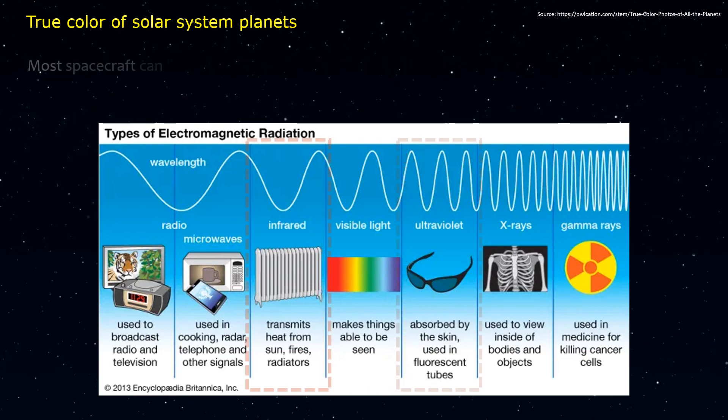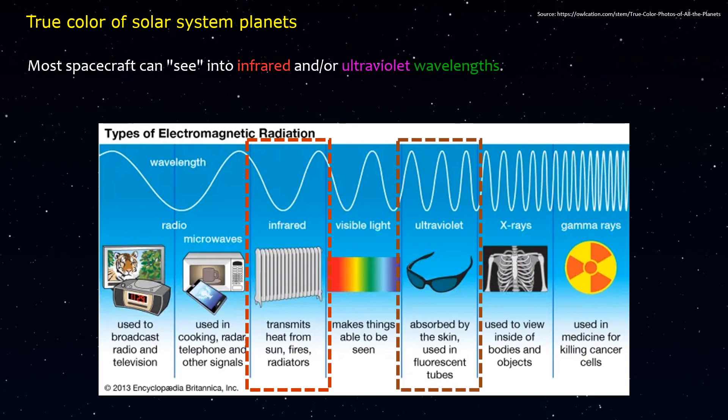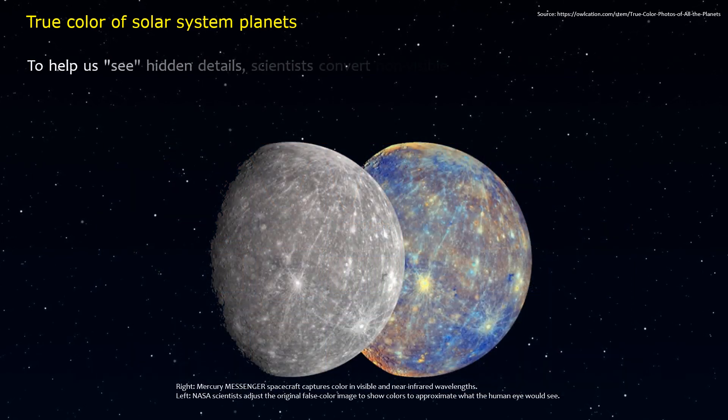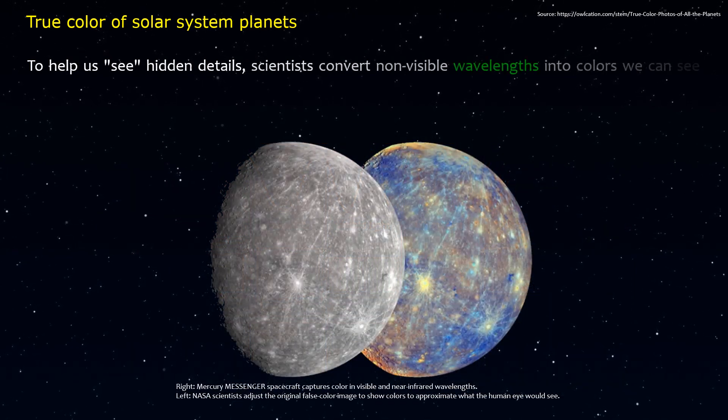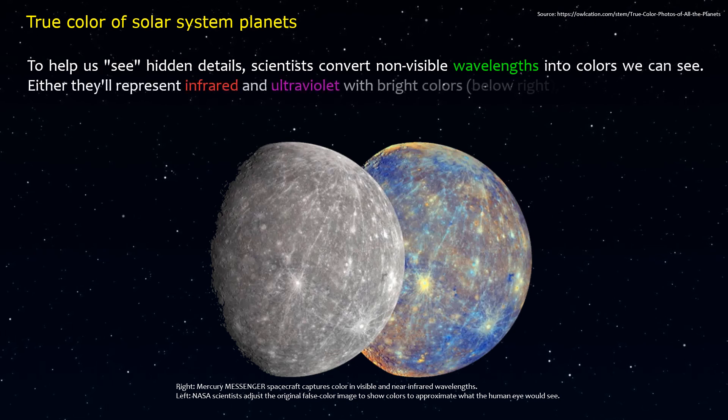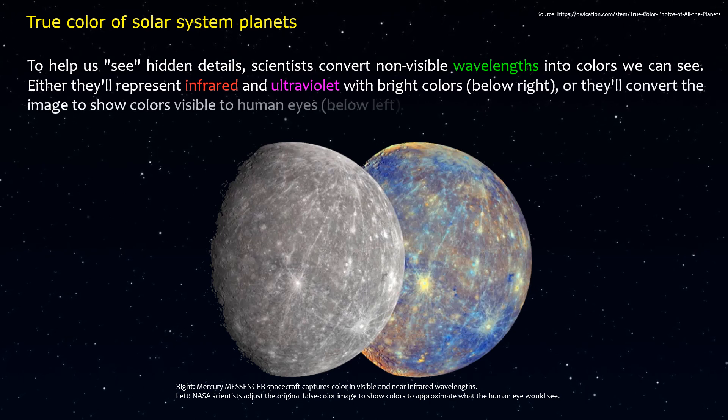Most spacecraft can see into infrared and/or ultraviolet wavelengths. To help us see hidden details, scientists convert non-visible wavelengths into colors we can see. Either they'll represent infrared and ultraviolet with bright colors, or they'll convert the image to show colors visible to human eyes.